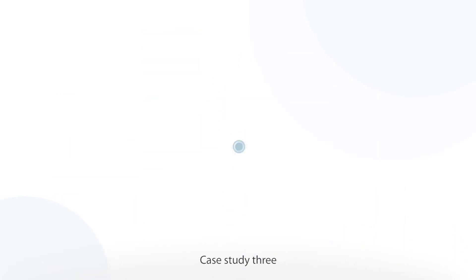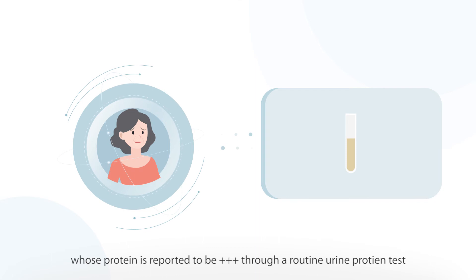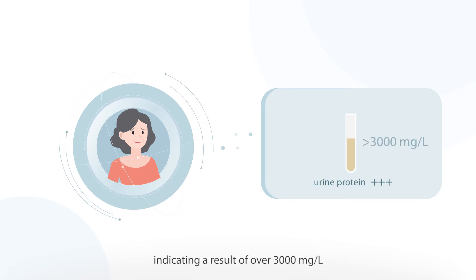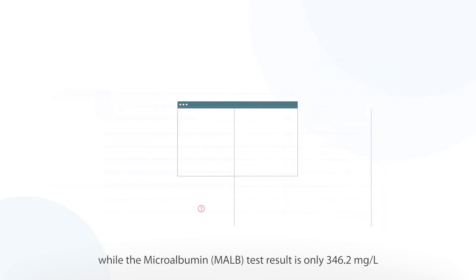Case Study 3: A 60-year-old female patient whose protein is reported to be triple plus through a routine urine protein test, indicating a result of over 3,000 mg per liter, while the microalbumin test result is only 346.2 mg per liter.